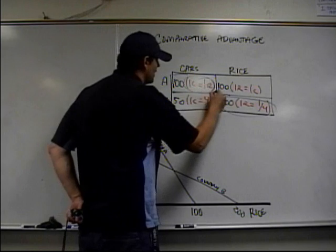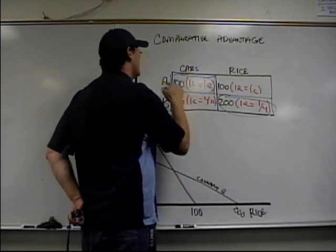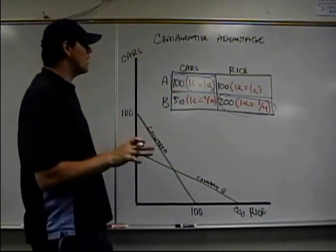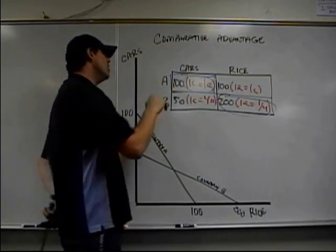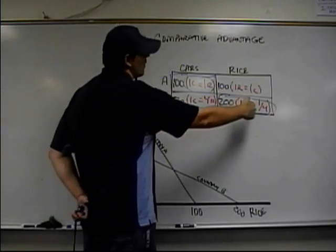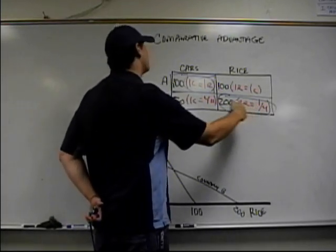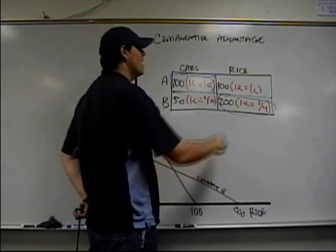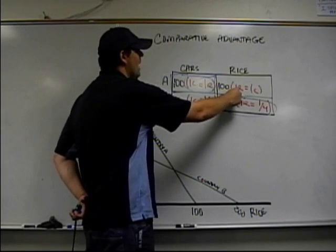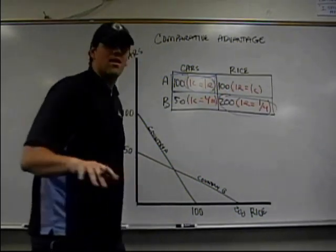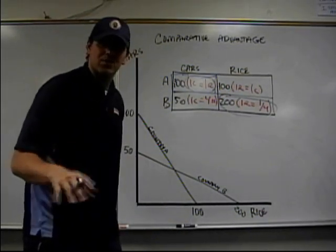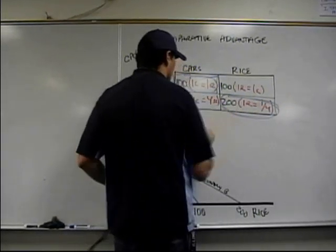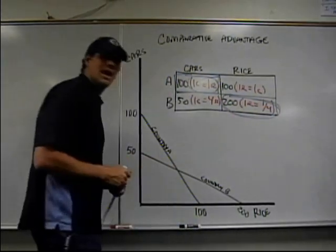Right here, as you can see, Country A should produce cars — no doubt about it. Country B gives up one-fourth a car for every single rice they make, and Country A gives up one. One-fourth — I'd rather have them produce it because they give up less. So Country B should be producing rice. That's how I got those numbers.